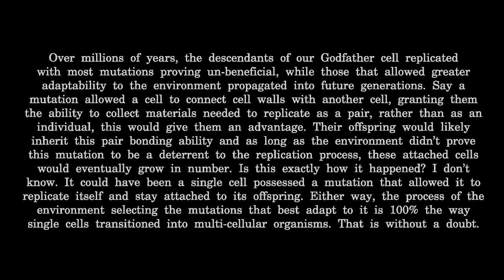Over millions of years, the descendants of our godfather cell replicated, with most mutations proving unbeneficial, while those that allowed greater adaptability to the environment propagated into future generations. Say a mutation allowed a cell to connect cell walls with another cell, granting them the ability to collect materials needed to replicate as a pair rather than as an individual — this would give them an advantage. Their offspring would be likely to inherit this pair-bonding ability, and as long as the environment didn't prove this mutation to be a deterrent, these attached cells would eventually grow in number. The process of the environment selecting the mutations that best adapt to it is 100% the way single cells transition into multicellular organisms.